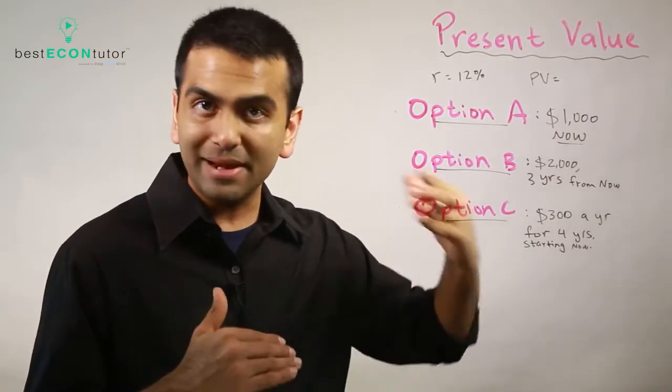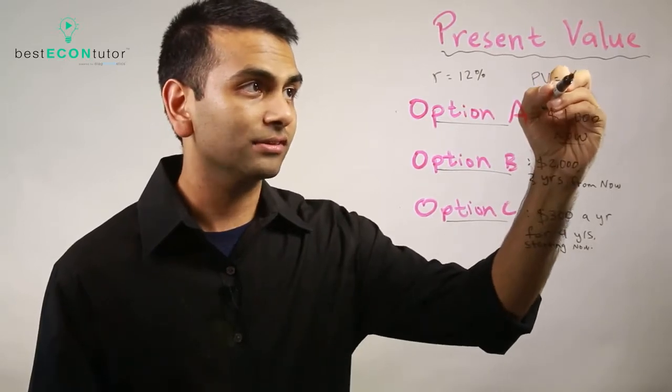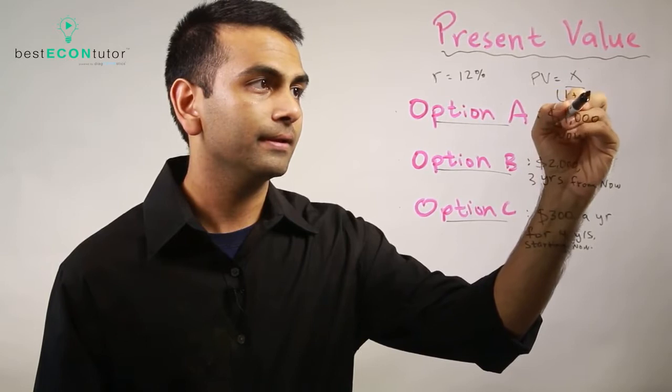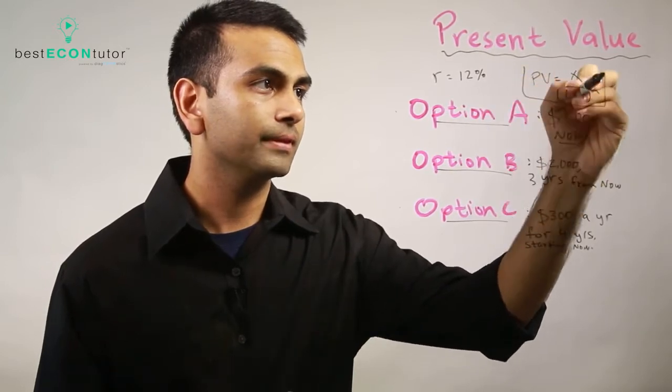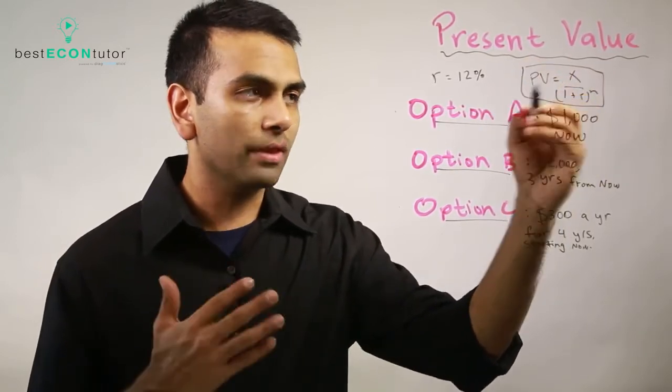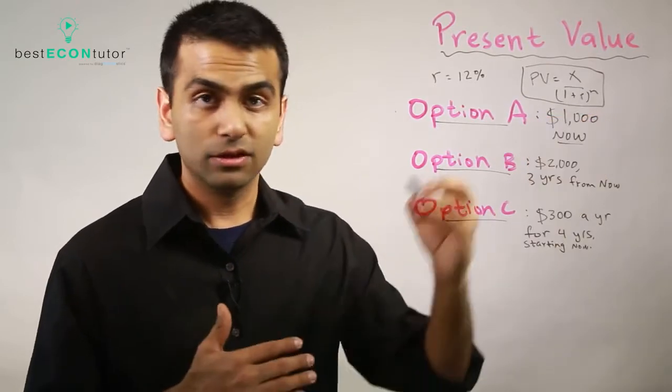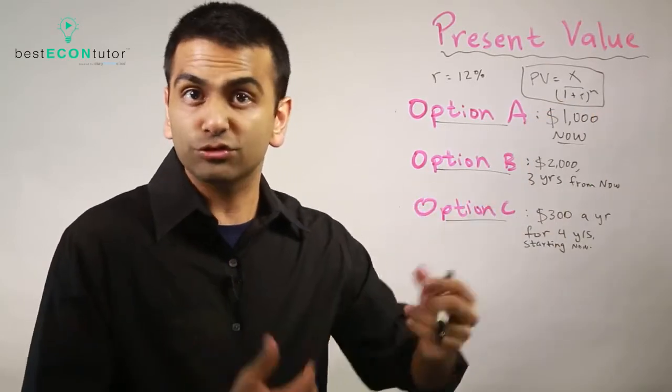Now the present value, here's the grand formula: the present value of X dollars given to you N years from now is X divided by (1 + R) to the N. Now one thing about this formula is you can clearly see that N, the number of years into the future you actually get the money,